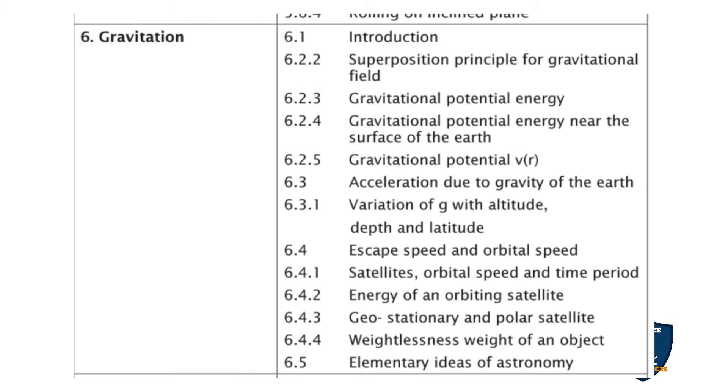Chapter 6: Gravitation. 6.1 Introduction, 6.2.2 Superposition Principle of Gravitational Field, 6.2.3 Gravitational Potential Energy, 6.2.4 Gravitational Potential Energy Near the Surface of the Earth, 6.2.5 Gravitational Potential, 6.3 Acceleration Due to Gravity of the Earth, 6.3.1 Variation of g with Altitude, Depth, and Latitude, 6.4 Escape Speed and Orbital Speed, 6.4.1 Satellite Orbital Speed and Time Period, 6.4.2 Total Energy of an Orbiting Satellite, 6.4.3 Geostationary and Polar Satellites, 6.4.4 Weightlessness, 6.5 Elementary Ideas of Astronomy.